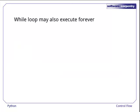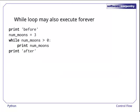A while loop may also execute forever. Here's another copy of the program that doesn't subtract 1 from nummoons inside the loop body. It prints before, then 3, then 3 again, then another 3, and so on.